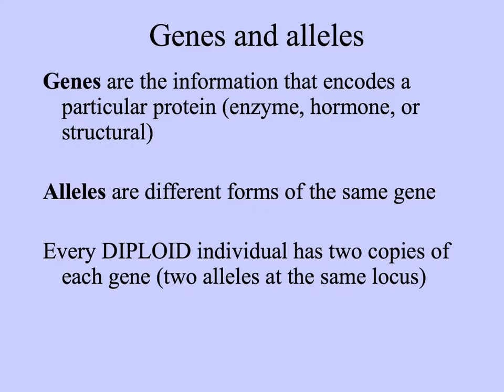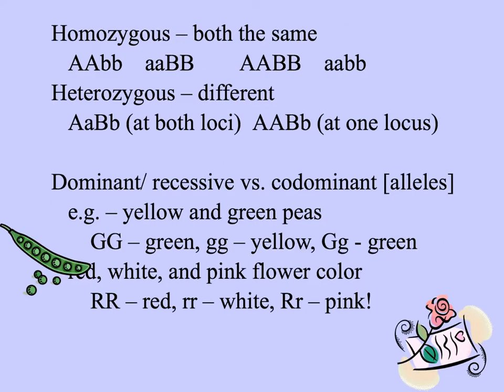Genes are the information coding for a particular protein, essential in all biological reactions — these proteins could be enzymes, hormones, or structural proteins. Different forms of the same gene are called alleles. For organisms that are diploid, every individual has two copies of each gene — two alleles at the same locus or genetic location. Organisms can be homozygous, having the same allele at a given locus, or heterozygous with different alleles at one or multiple loci. These are combinations of genotypes we might find for a simple organism with two loci: the A locus and the B locus.